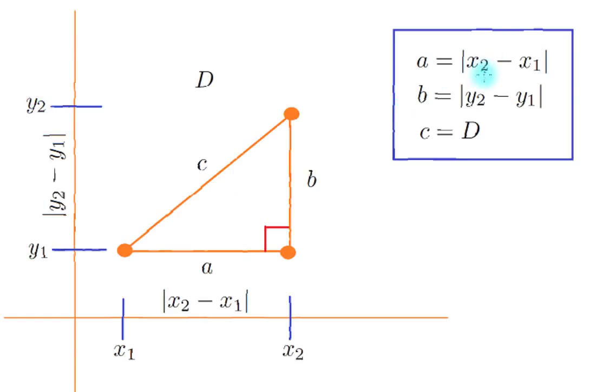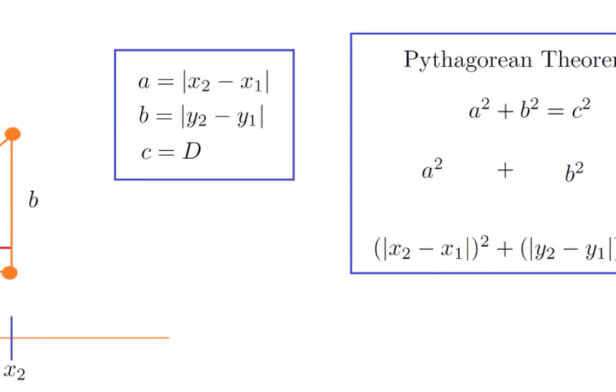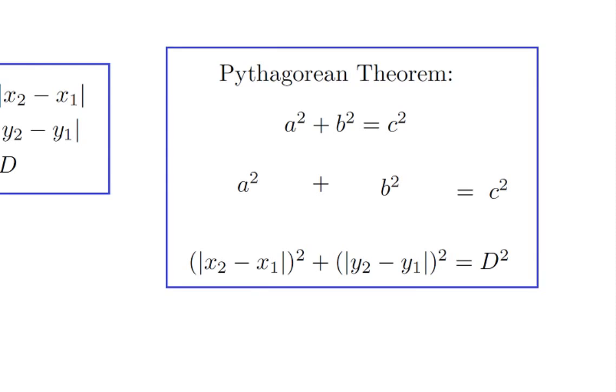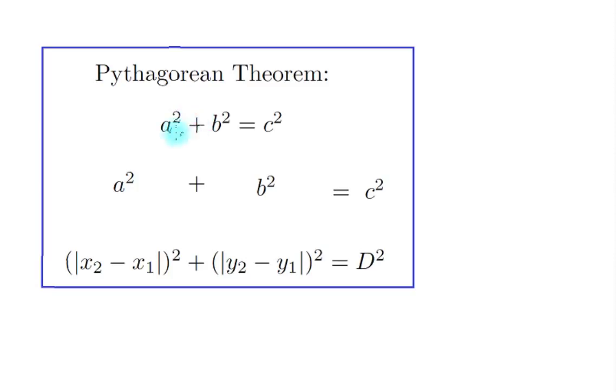And let c equal D as distance. We're going to use D for distance. Now applying the Pythagorean theorem, we have a² + b² = c².